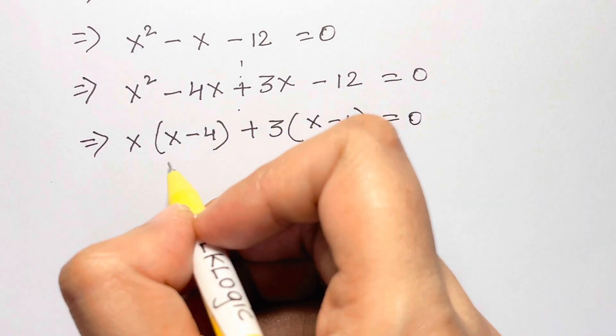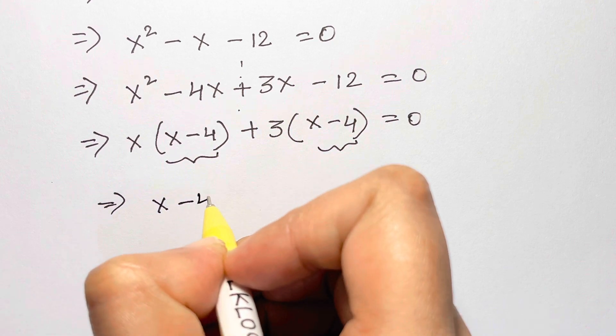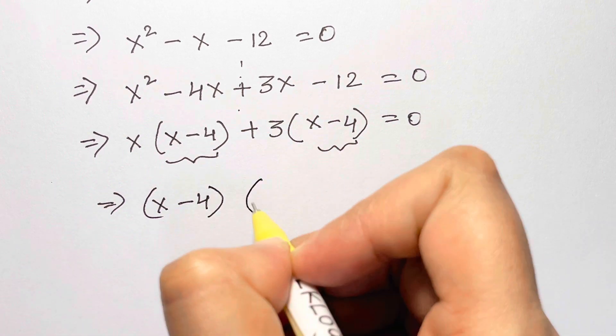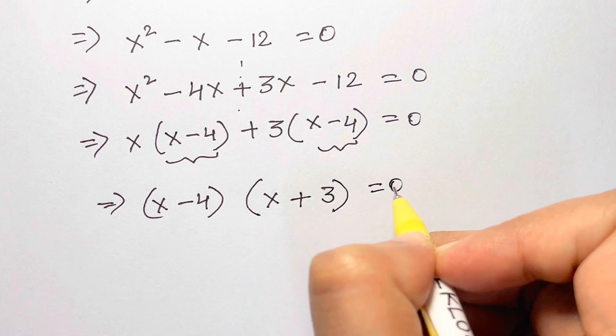Now here we have x minus 4, x minus 4 common, so we are going to take that out: x minus 4. So we are left with x from here and plus 3 is equal to zero.